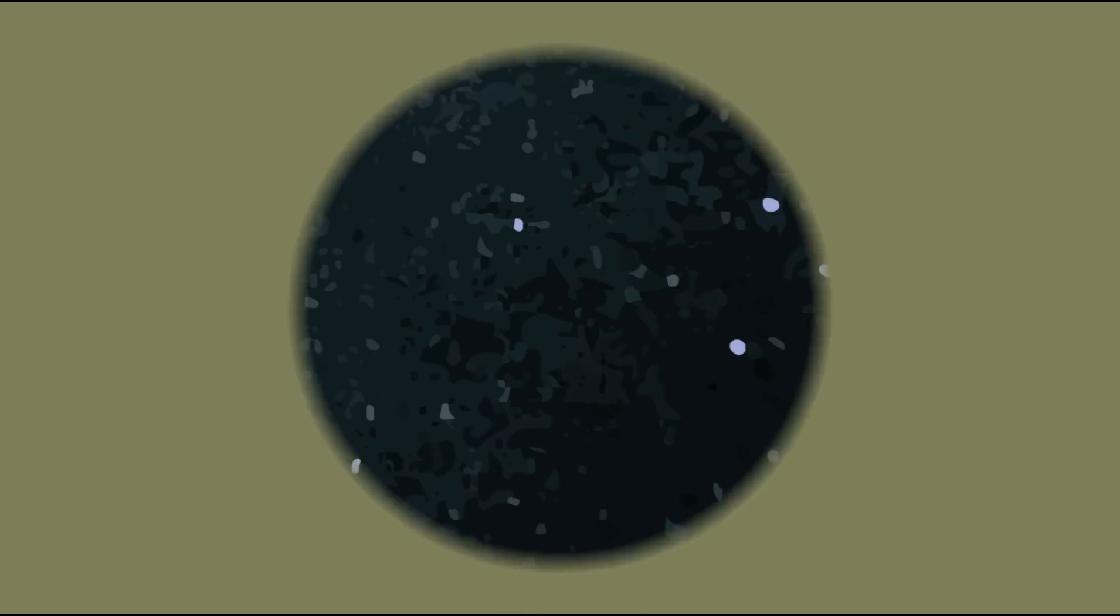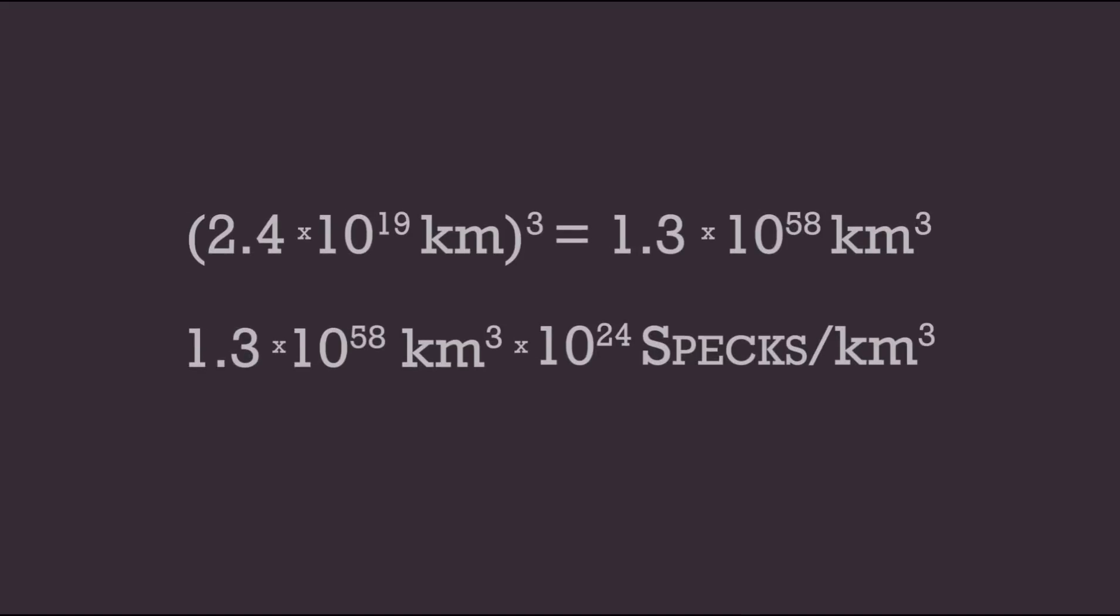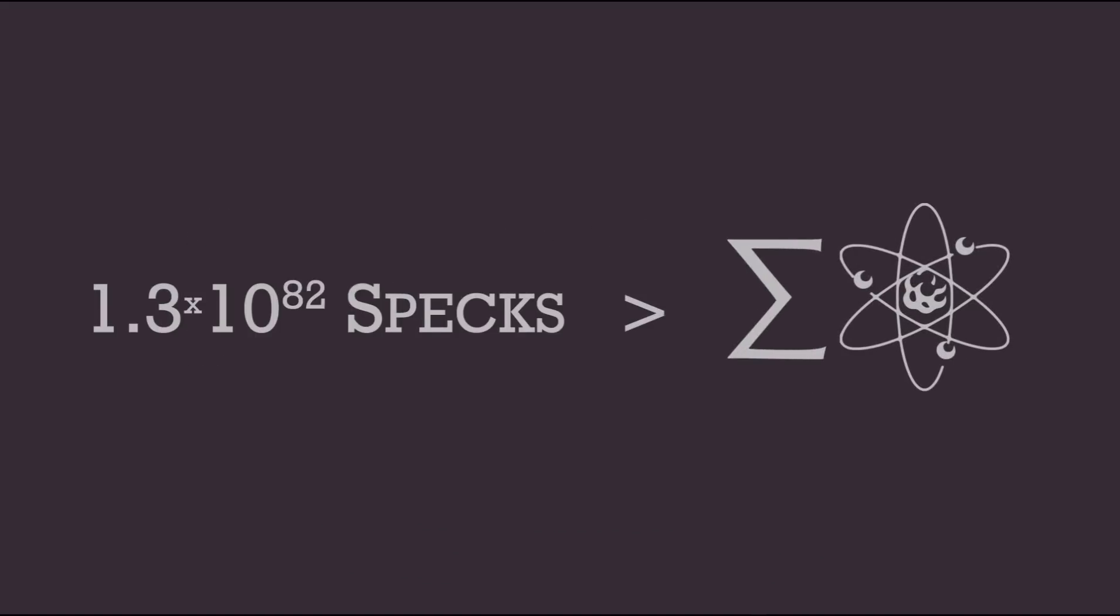Now, let's go back to the Andromeda Galaxy, but this time we'll make a cube out of the distance between it and Earth. Doing the calculations gives us a whopping total of 1.3 times 10 to the 82nd specks of pollen, a number that outclasses the estimated number of atoms in the visible universe.